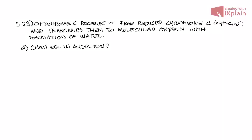This problem is number 23 from chapter 5 of the Atkins Petts book. We're told that cytochrome C receives electrons from reduced cytochrome C and transmits them to molecular oxygen with formation of water.